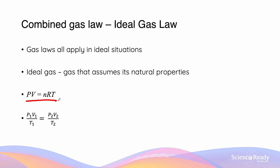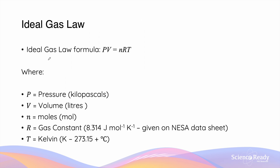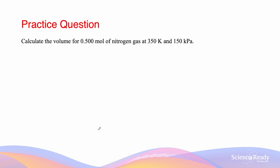The ideal gas law is useful in helping us determine conditions for an ideal gas. It follows the formula PV = nRT, where P is pressure in kilopascals, V is volume in liters, n is the number of moles, R is the gas constant 8.314 J·mol⁻¹·K⁻¹ (given on the data sheet), and T is in Kelvin, equal to 273.15 plus degrees Celsius.